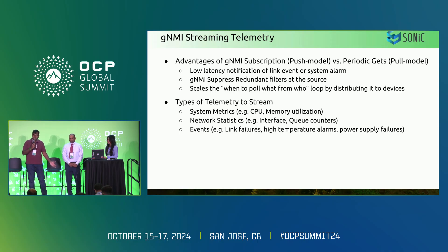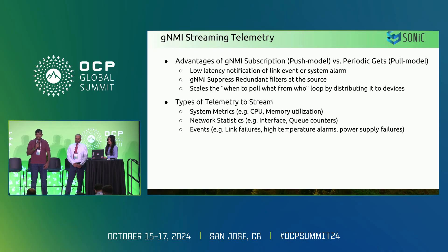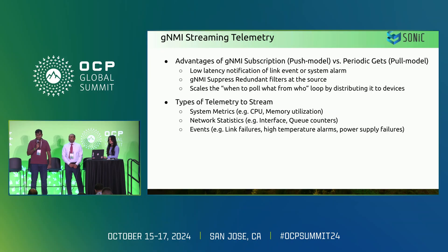You have the ability to suppress redundant data at the source itself within the switch. This allows us to scale to a large number of switches, since it's the switches that decide which data to send out to the client. The three things we want to focus on in the next few slides are system metrics, network statistics, and events. With that, I'll hand over the mic to Anand.